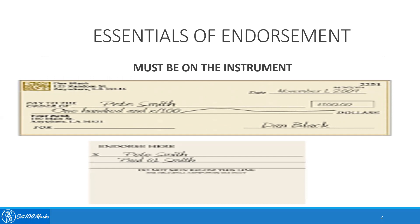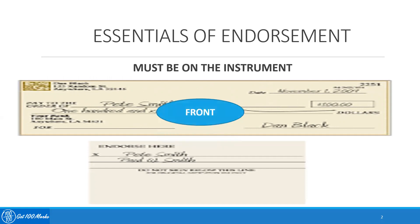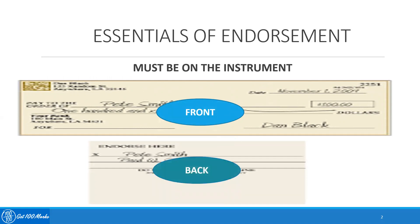The first essential states that the endorsement must be on the instrument. When you're endorsing an instrument, it can be either on the front or on the back of the instrument. In very rare cases, people also do an endorsement on a separate piece of paper which is attached to the instrument. The endorsement should either be a part of the instrument or should be attached to it.